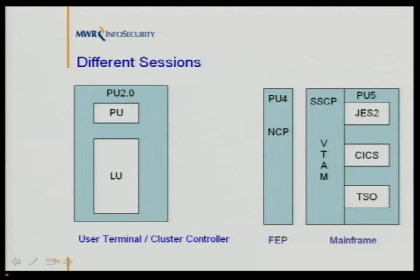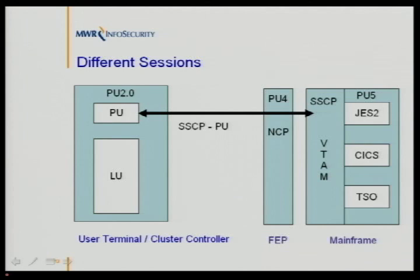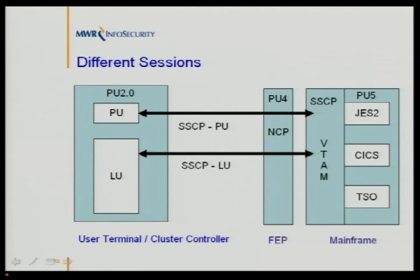Standing in front of the mainframe is what's known as a front-end processor — dedicated hardware that used to handle network path control and routing within the SNA environment. When we establish an SNA communication, there are three different sessions. The first is the SSCP-to-PU session, responsible for forming a network route to the physical device. The next is the SSCP-to-LU session, where VTAM presents the user with a logon screen and passes credentials back to the mainframe. Assuming successful authentication, we then have an LU-to-LU session established — for example, to TSO within the mainframe. All these sessions exist at the same time.